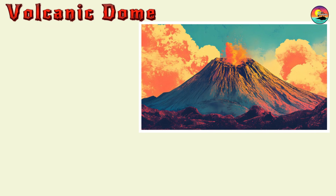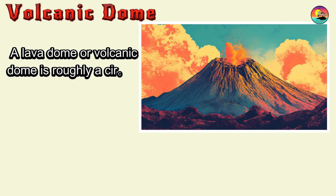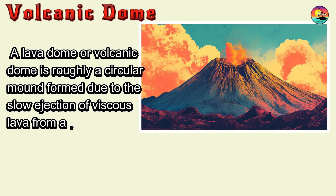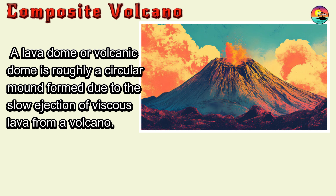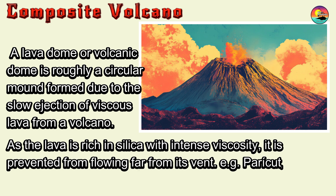Volcanic Dome. A lava dome or volcanic dome is roughly a circular mound formed due to slow ejection of viscous lava from a volcano. As the lava is rich in silica with intense viscosity, it is prevented from flowing far from its vent. For example, Parícutin in Mexico.